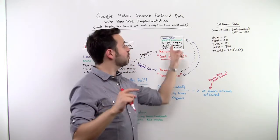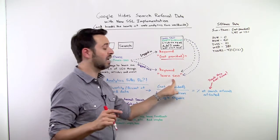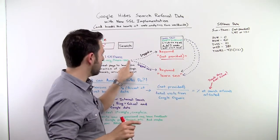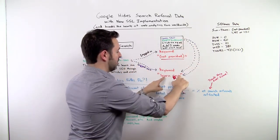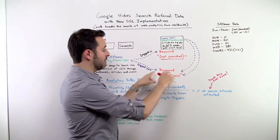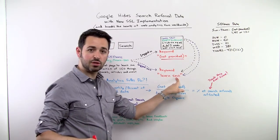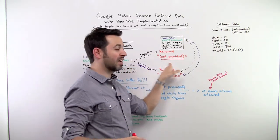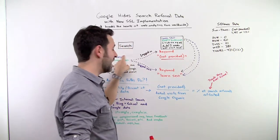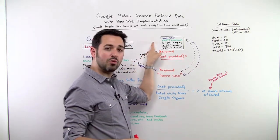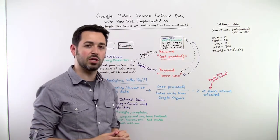However, if you click this paid search ad, they will still be providing the keyword Learn SEO. So logged out behavior always gets keyword Learn SEO as the referrer. Logged in behavior gets keyword not provided if you click on organic results. But if you're paying Google, you will still be able to see the referral information.